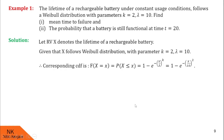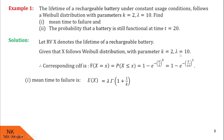Now let us find the mean time to failure. The mean is E(x) = lambda times gamma(1 + 1/k). Since lambda is 10 and k is 2, E(x) = 10 times gamma(1 + 1/2) = 10 times gamma(3/2). You can further calculate gamma(3/2) using its integral definition, or leave your answer at this point.